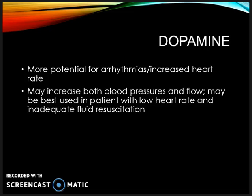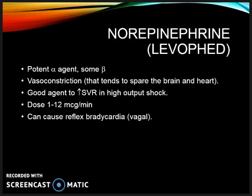Dopamine is a vasopressor with alpha-1 activity. It has more potential for arrhythmias and increased heart rate. As it may increase both blood pressure and flow, it may be best used in patients with a low heart rate and inadequate fluid resuscitation. Norepinephrine was historically considered a poor choice in shock due to its excessive vasoconstriction and end-organ hypoperfusion — you may be familiar with the term 'leave them norepi, leave them dead.' However, the benefits are continually being observed, including a rise in arterial pressure and systemic vascular resistance while maintaining cardiac function and improving renal function. It is a very common pressor used in the ICU.